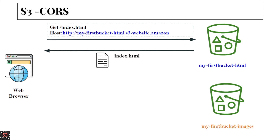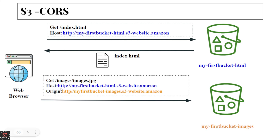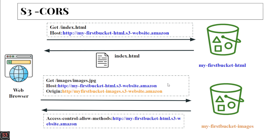The web browser then makes a cross-origin GET request to the second bucket for images, specifying host and origin. The image bucket (cross origin) responds with headers stating it has allowed the main origin for GET, PUT, and DELETE methods. The web browser then gets the images from the cross origin into the index.html page.